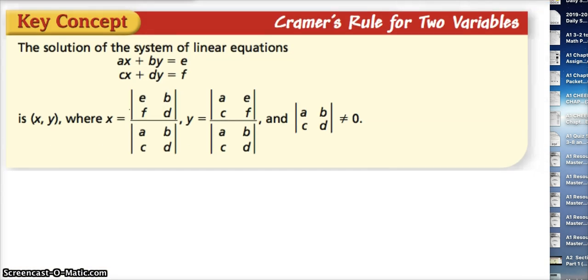We're going to find a particular array or way of organizing them, such that if we find the determinant of the organized information, we can find the value for x and y. So here we have our key concept.